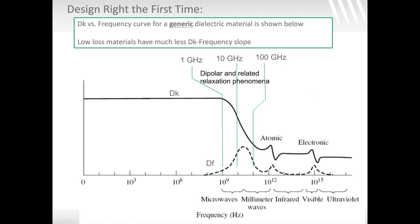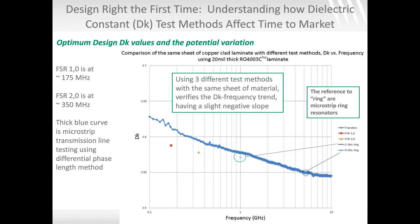I confirmed this dispersion trend by testing the exact same sheet of material with three different test methods: full sheet resonance (FSR) at node 1-0 (~175 MHz) and node 2-0 (~350 MHz), ring resonators at 1 GHz and 5 GHz, and the microstrip differential phase length method. In all three cases, an increase in frequency corresponded to a decrease in dielectric constant, validating the general material dispersion trend. We have tested this many times.